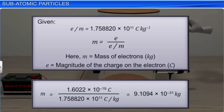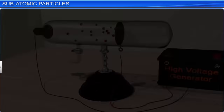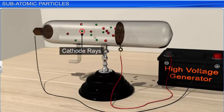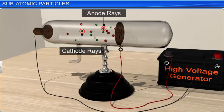The mass of the electron was then determined by combining the results of Milliken's oil drop experiment and Thomson's value of the e/m ratio, and was found to be 9.1094 × 10⁻³¹ kg. Just like the discovery of cathode rays led to the discovery of negative particles called electrons, the discovery of anode rays led to the discovery of positive particles called protons.